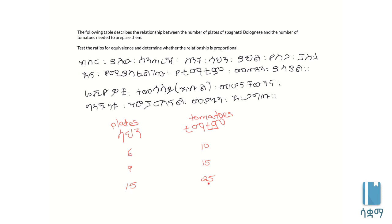With this method, the ratio of plates to tomatoes - if the ratio of plates to tomatoes is constant, and the ratio of tomatoes to plates is also constant, then we have equivalence.